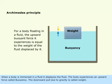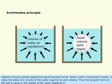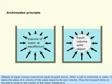Archimedes' principle: When a body is immersed in a fluid, it displaces the fluid. The body experiences an upward force called buoyancy. The downward pull due to gravity is called weight. Objects of equal volume experience equal buoyant force. When a ball is immersed in water, it takes the place of a volume of water equal to its own volume. Thus, the buoyant force on the ball is equal to the weight of the water it displaces.